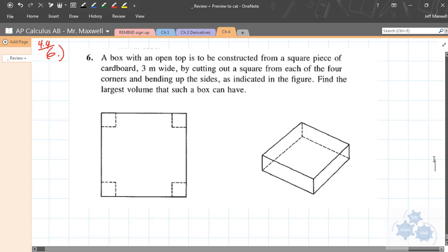All right, so this is optimization section 4.4, number 6. A box with an open top is to be constructed from a square piece of cardboard 3 meters wide by cutting out a square from each of the four corners and bending up the sides. So you can kind of envision this. This is 3 meters right here all the way across. It's a solid piece of cardboard.